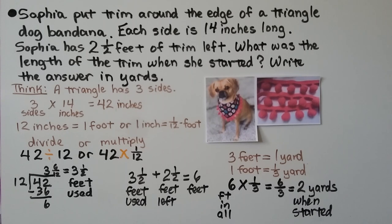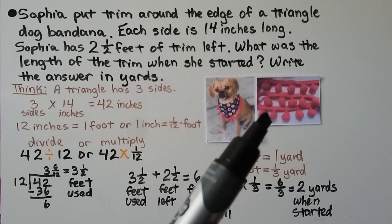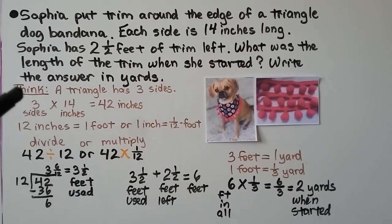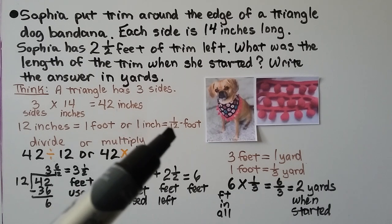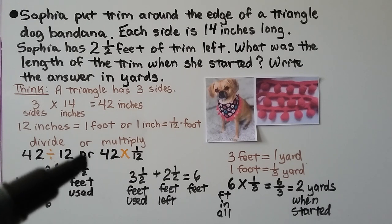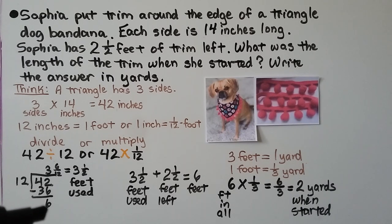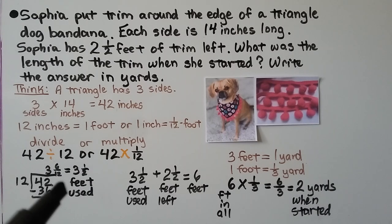Sophia put trim around the edge of a triangle dog bandana using pink pom-pom trim. Each side is fourteen inches long, and she has two and a half feet of trim left. What was the length of trim when she started, in yards? A triangle has three sides: three times fourteen inches is forty-two inches. Twelve inches equals one foot, so one inch is one-twelfth of a foot. Forty-two divided by twelve: twelve fits three times (12 × 3 = 36), remainder six, giving three and six-twelfths, which simplifies to three and a half feet used.